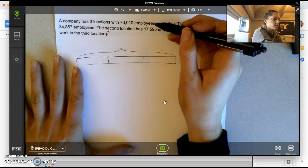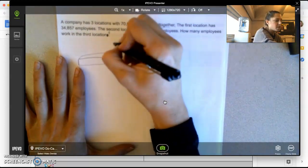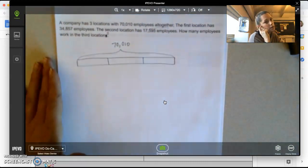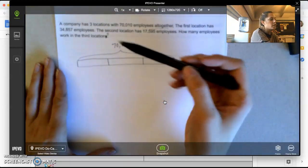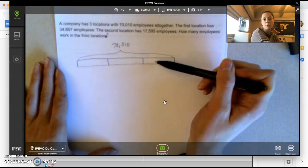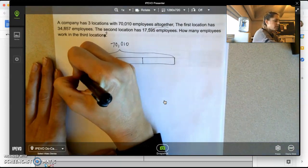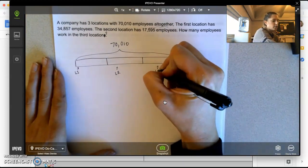So I can see 'all together' tells me a total. And I know the total in my tape diagram will go right here. I also can see the first location, second location, and third location. So I knew that I needed three parts to my tape diagram. So this will be my first location. I'll do L1, L2, and L3.